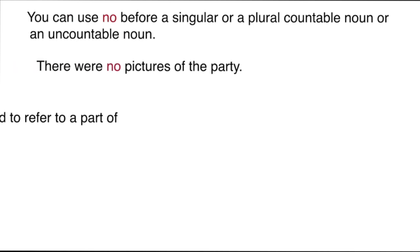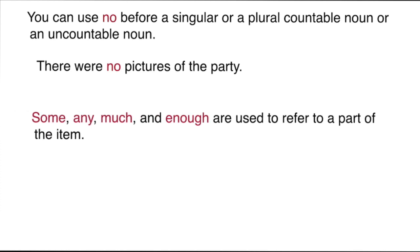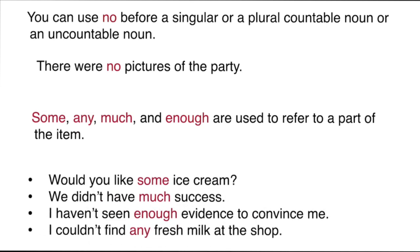'Some', 'any', 'much', and 'enough' are used to refer to a part of something, not the whole. For example, 'Would you like some ice cream?' means a small portion. 'I wouldn't have much success' means not all success. 'I haven't seen enough evidence to convince me' means only a little evidence — not complete or total evidence.